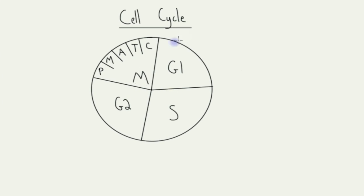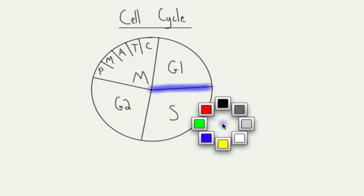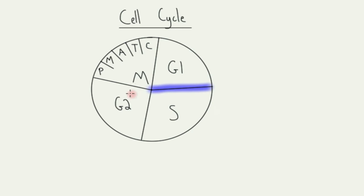There are three checkpoints in the cell cycle, and they go here between the G1 and the S phase, here between the G2 and the M phase, and then the third one is going to be right here in the middle of the M phase.